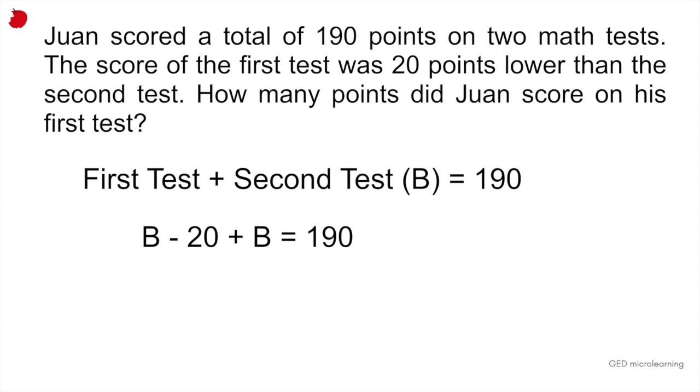We don't know what he scored on the second test. So we're just going to call that value B or X or whatever you want. And we know that in the first test, he scored 20 points less than the second test, which we had called B. So the first test will be B minus 20. And the second test will be B. So you set up your equation like that.